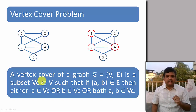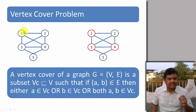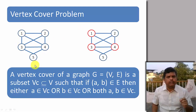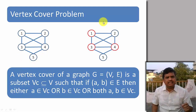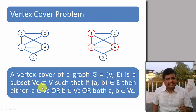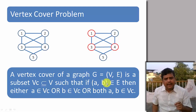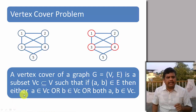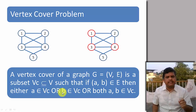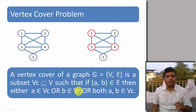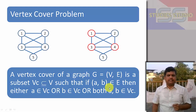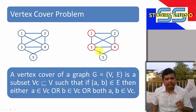So as per the definition, the vertex cover of graph G(V,E) is a subset VC. In the vertex set V I have vertices 1, 2, 3, 4, 5. But in the subset VC I have vertices 1, 3, and 4. So VC is a subset or equal to V. And if edge AB belongs to E — the set of edges in the graph — then either vertex A belongs to VC or B belongs to VC or both A and B belong to VC. That can be verified from this particular graph.